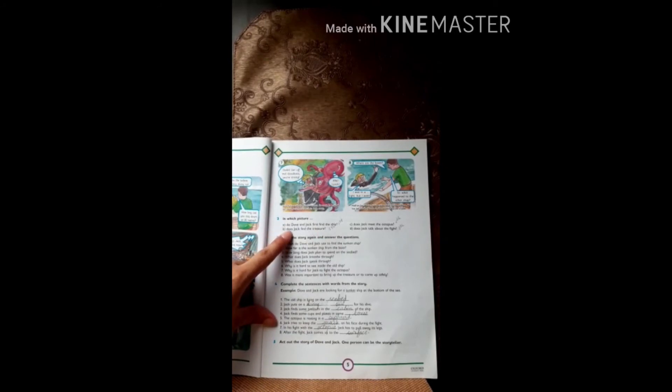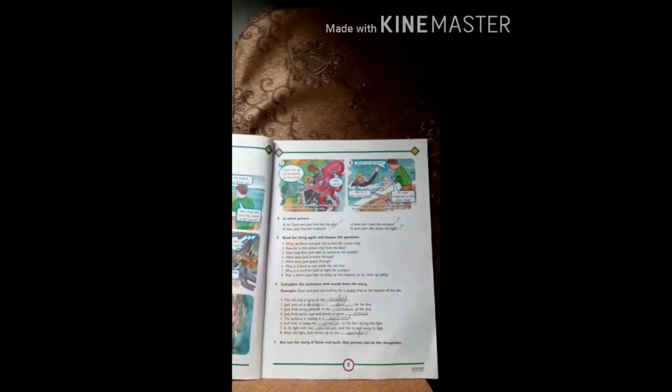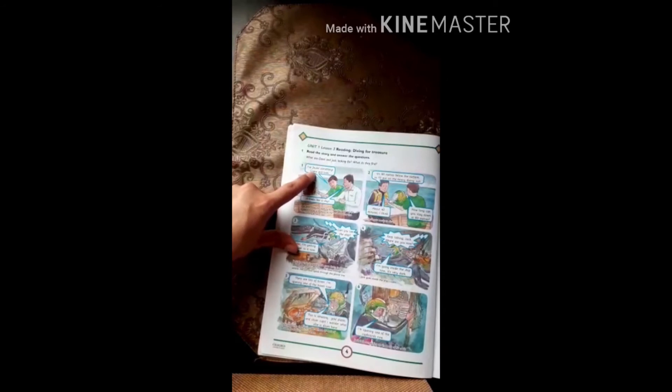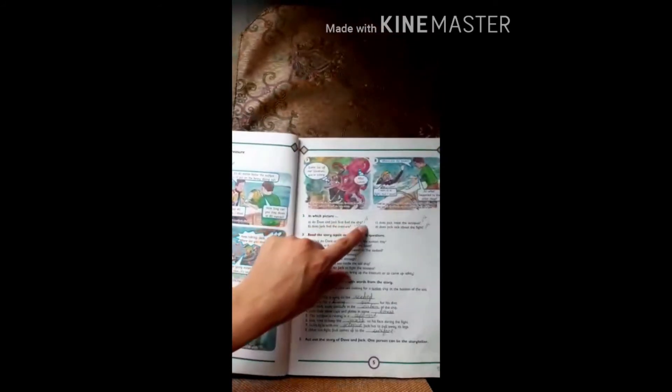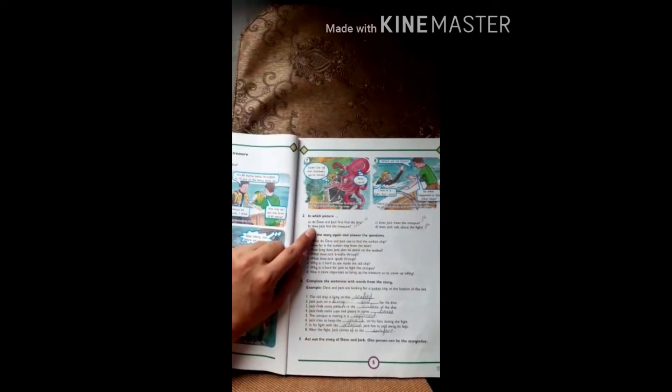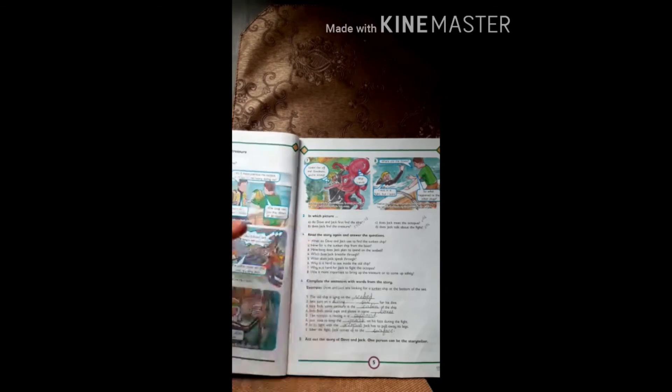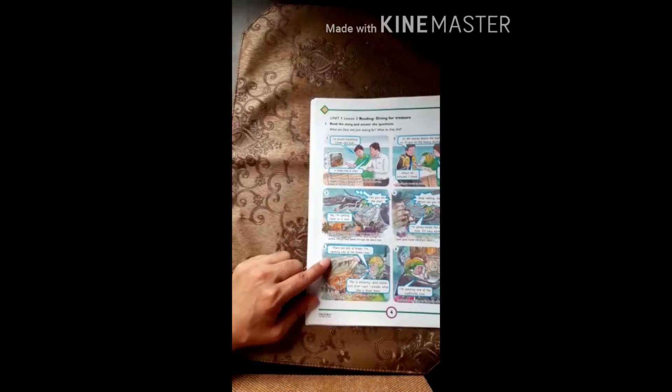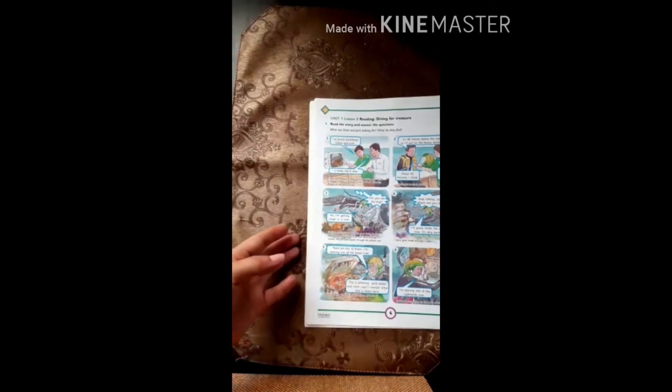Dave and Jack first find the ship. In which picture did you first see the ship? It was our first picture. Picture number one, I found something come and look. This is where they found the ship, so picture number one. Next, does Jack find the treasure? In which picture did Jack find treasure? In picture number five, he said there are lots of boxes, I am opening one of the boxes now, this is amazing, gold plates and silver cups. So write picture number five.